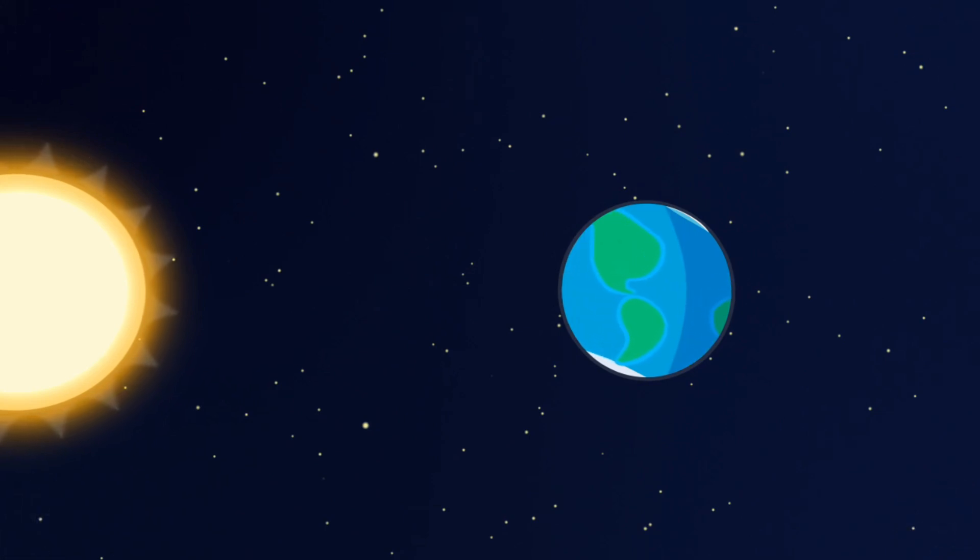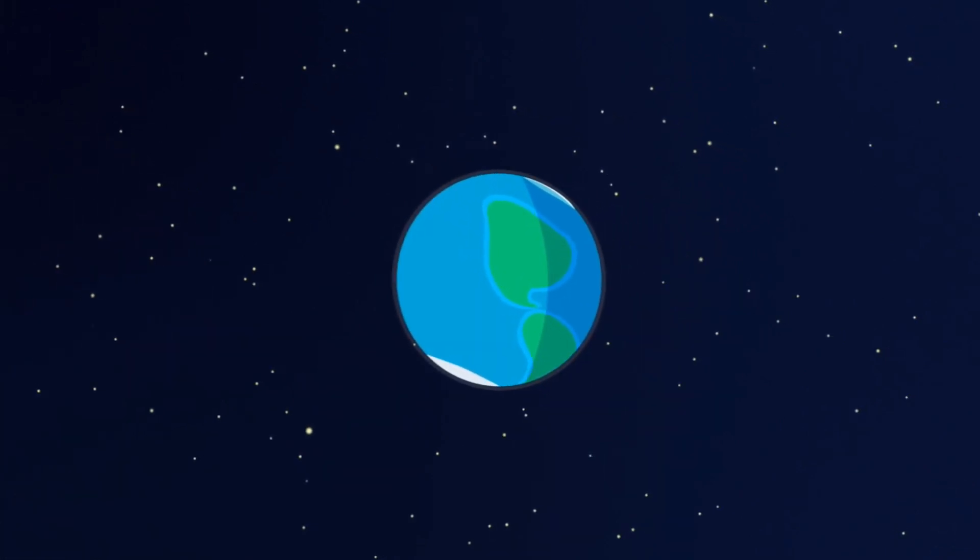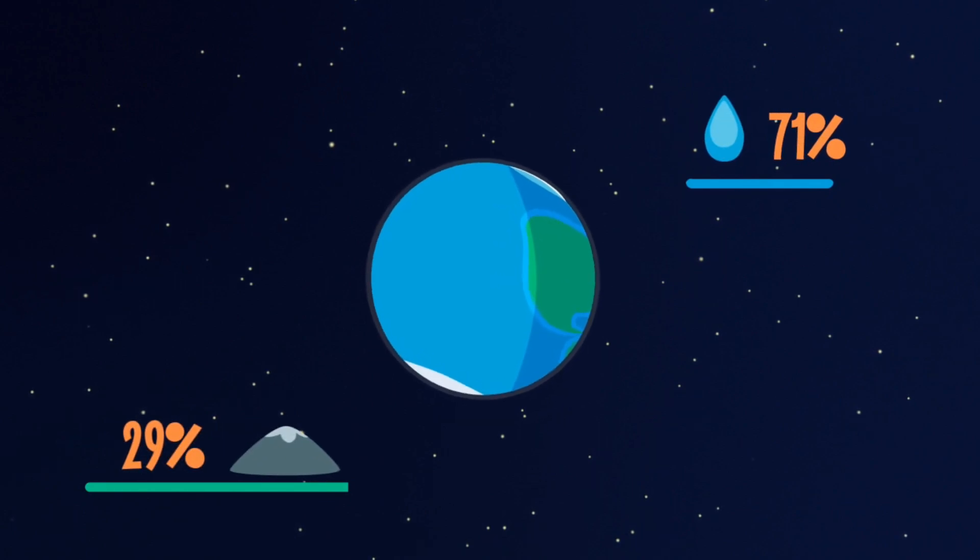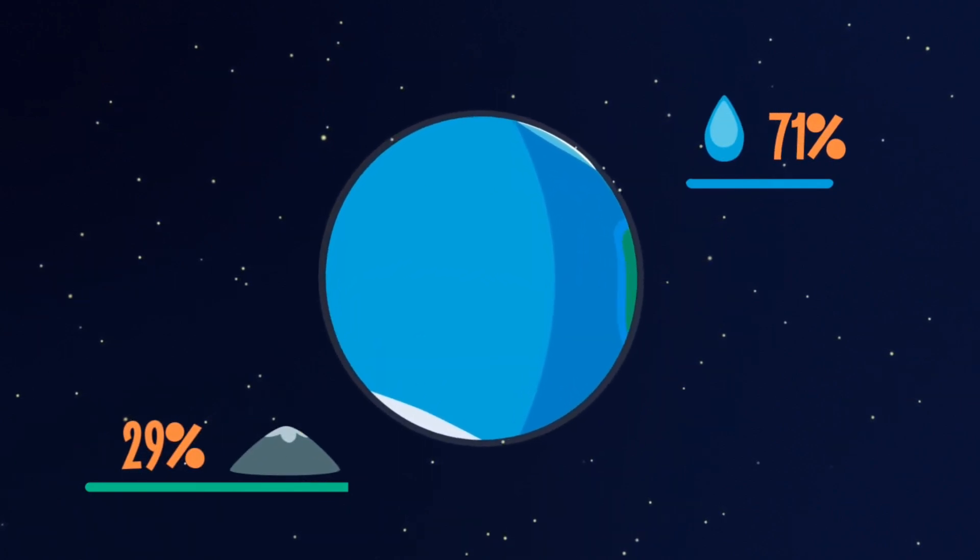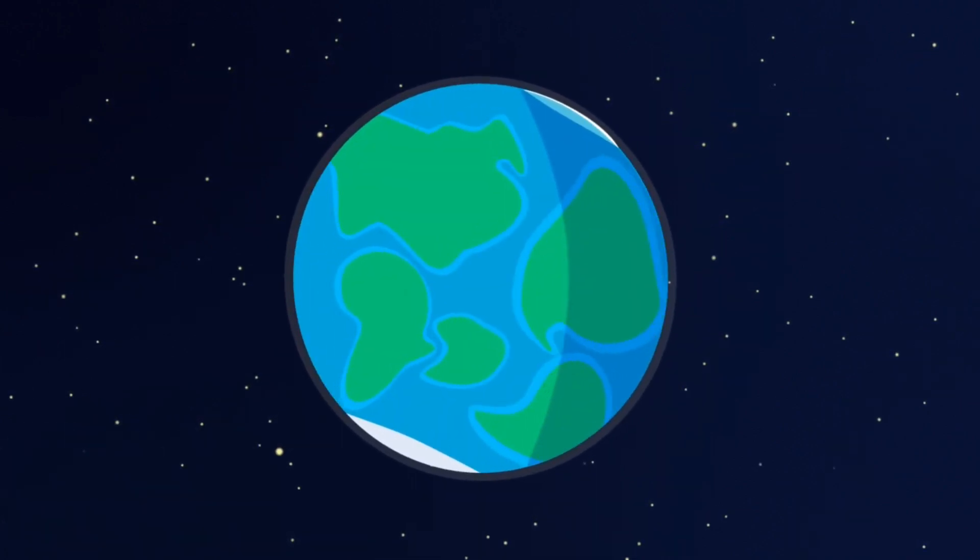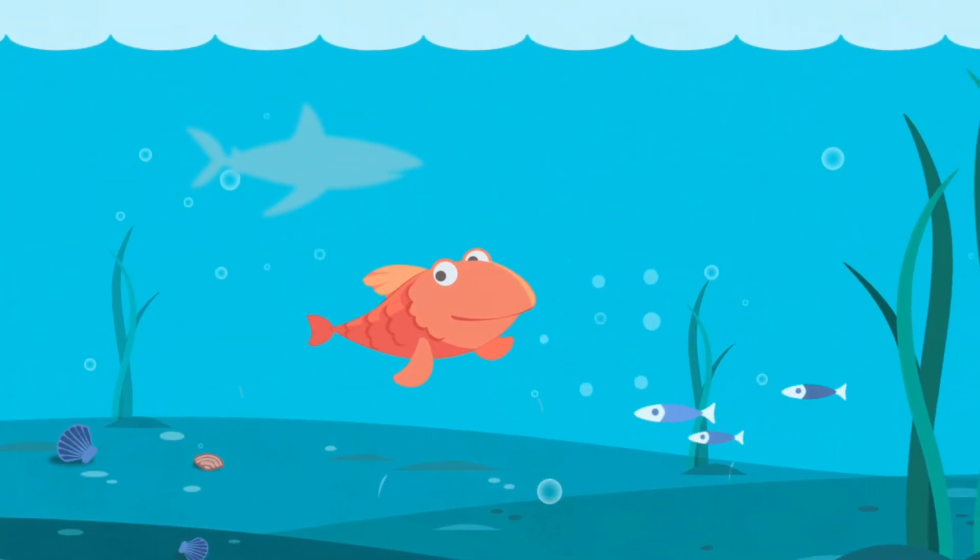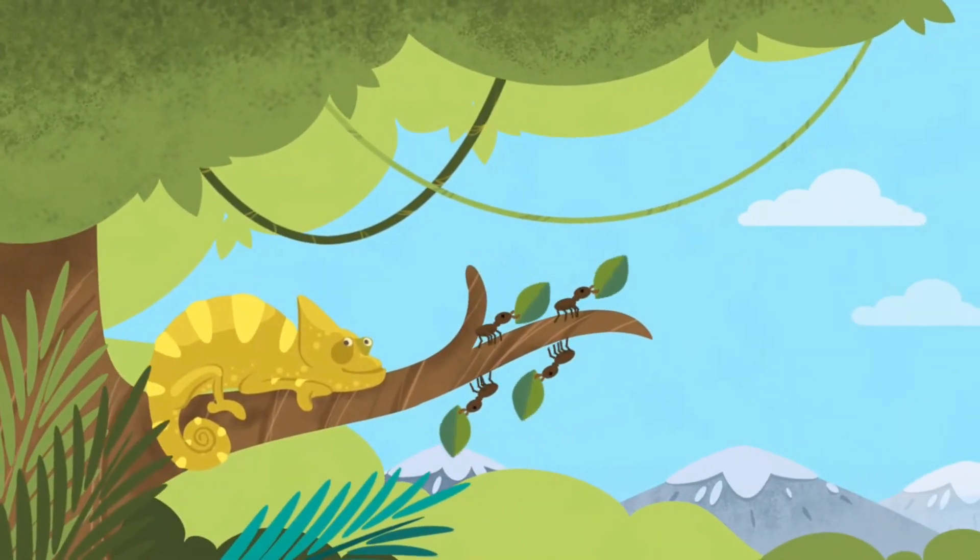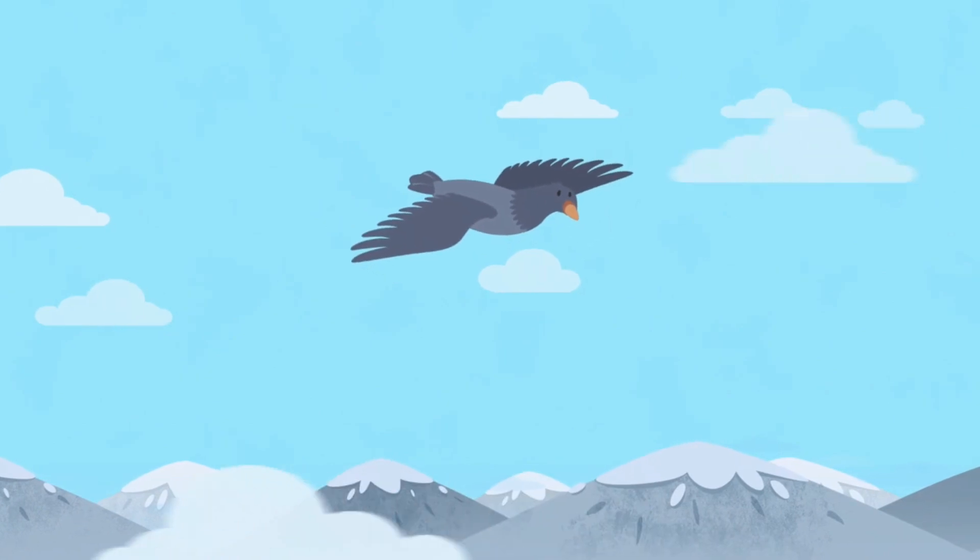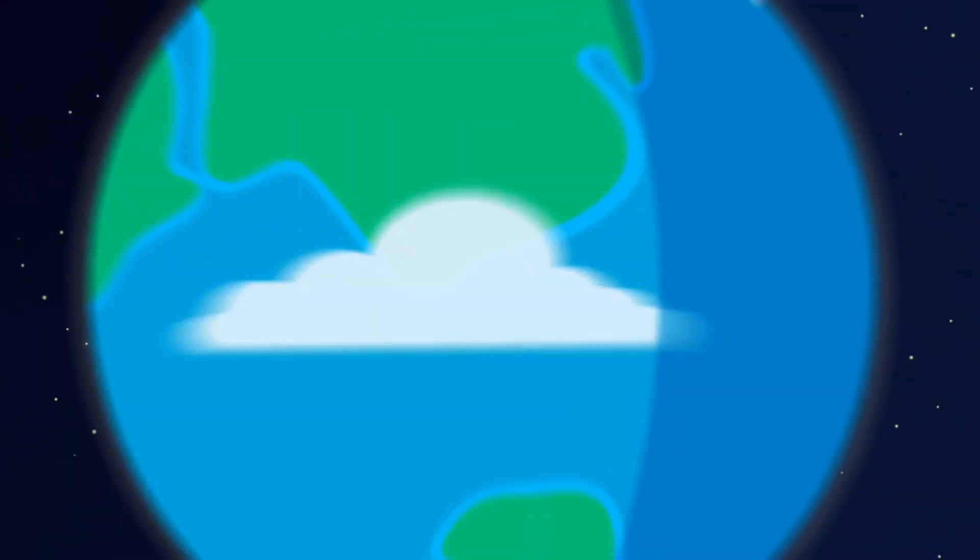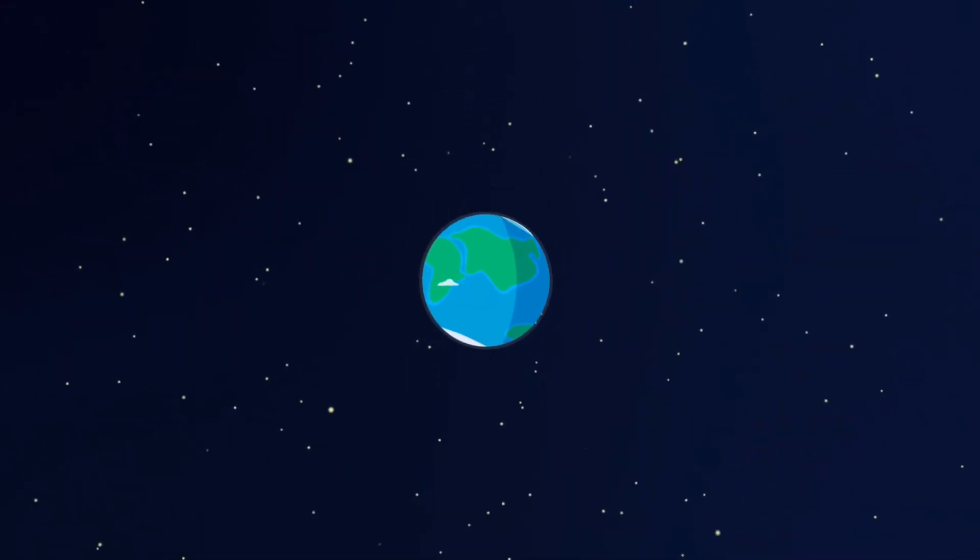Significant areas of our planet are covered with oceans. The largest of them is the Pacific Ocean, and it is bigger than all the continents combined. The Earth is inhabited by millions of species, under water, on the ground, and in the air, and they are all connected with each other. Our home is a fragile organism, and we should treat it very carefully.